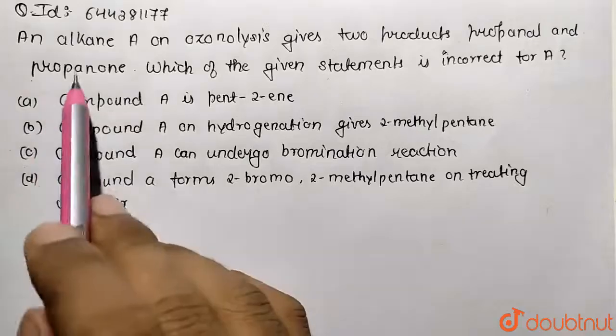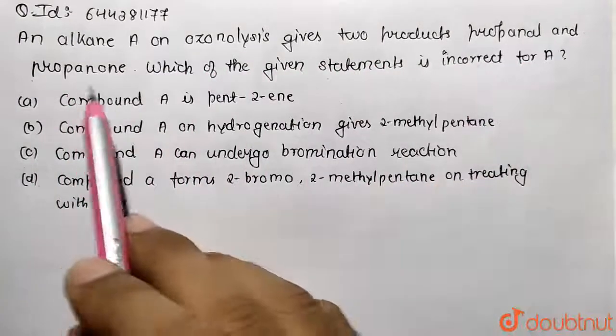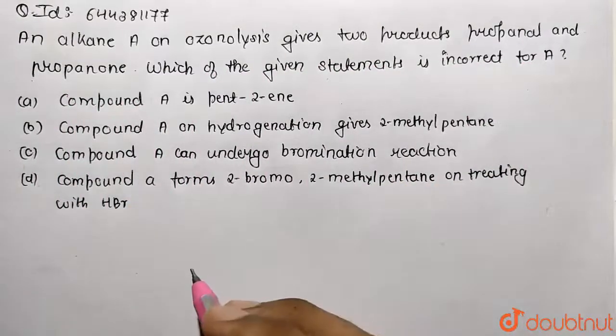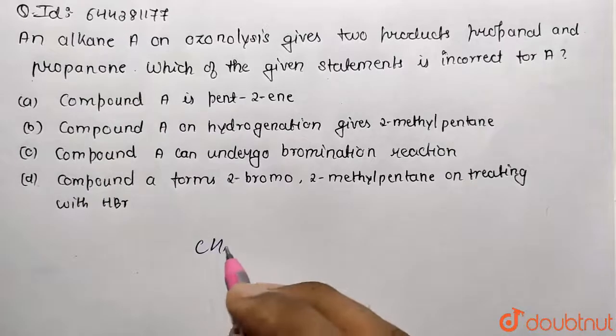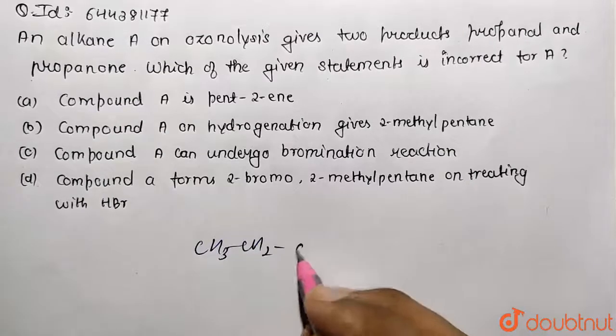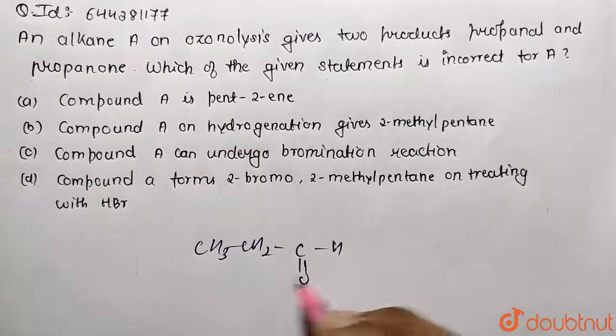We are asked: an alkene A on ozonolysis gives two products, propanol and propanone. So we are going to get propanol. How is propanol represented?